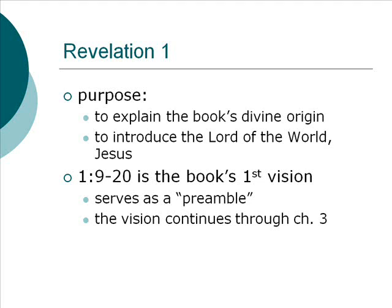This vision of Jesus in chapter 1 continues through chapters 2 and 3, including those letters to the seven churches. All of the things said of Jesus in chapter 1 are repeated in chapters 2 and 3. In these letters, Jesus introduces himself in various ways — for example, 'the one who holds the seven stars in his right hand' in chapter 2 verse 1 comes directly from chapter 1. Every description of Jesus in chapters 2 and 3 begins right here, setting the framework and tone for what Jesus is going to tell his people.